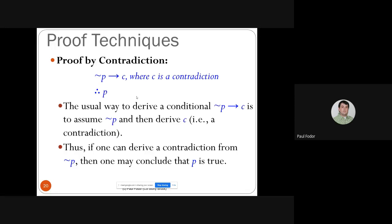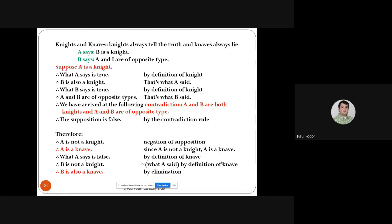Proof by contradiction: to prove proposition p is true, assume p is false (assume not-p is true) and derive a contradiction. Since we showed that assuming not-p leads to a contradiction, in a two-valued logical system we can derive that p must be true.